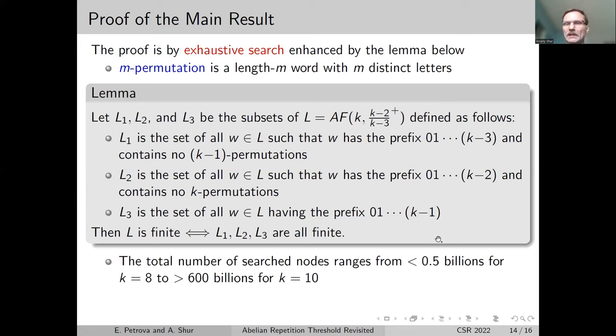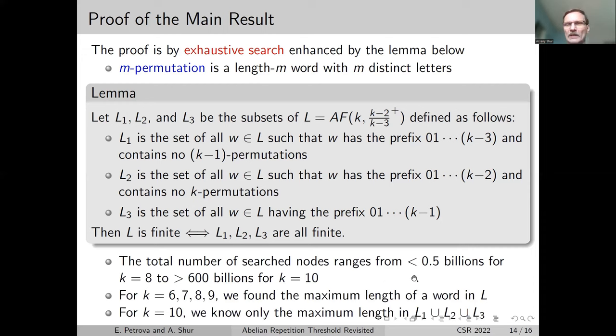These three results and observations give us the finiteness of language L. But the search is quite big. The smallest is for eight letters - about half a billion words. For 10 letters, it's more than 600 billion words. That was why we finally were able to, for seven, eight, or nine letters, find the maximum length of words. For 10, we were able only to find the maximum length in this subset, but not in all languages.